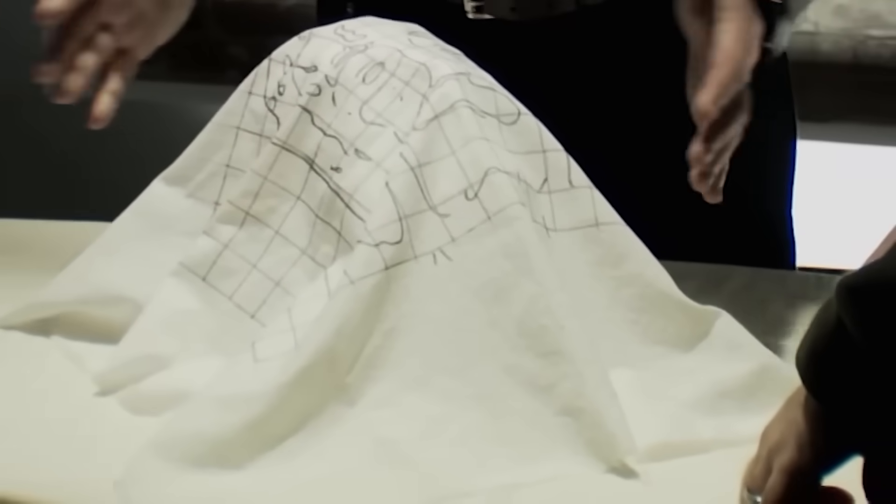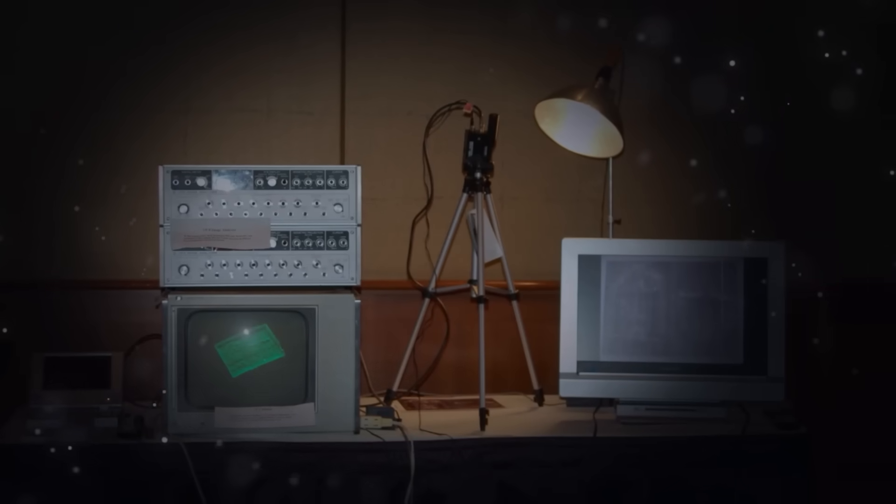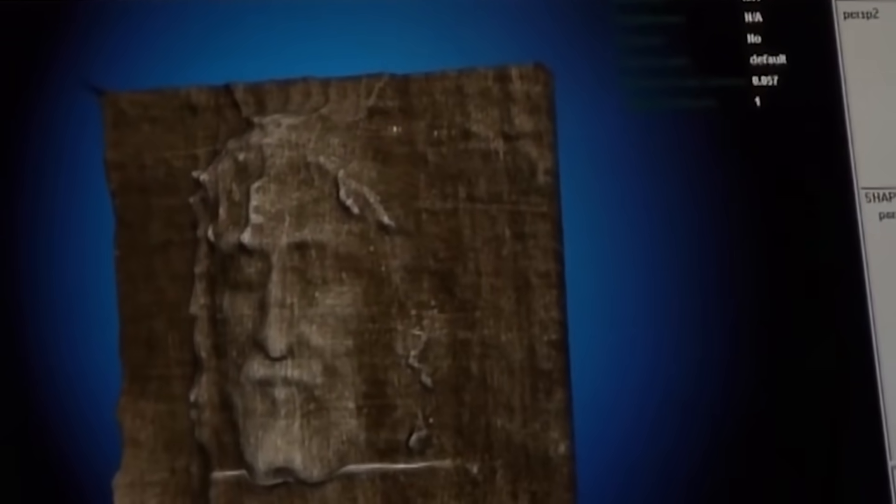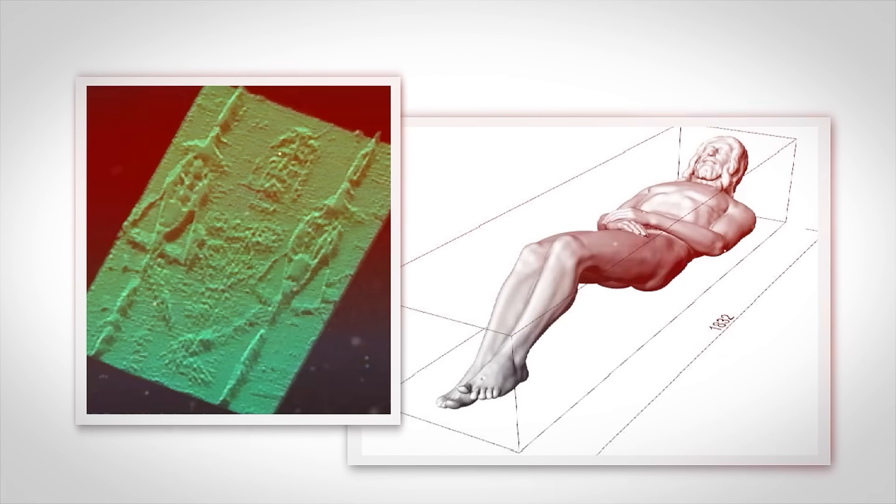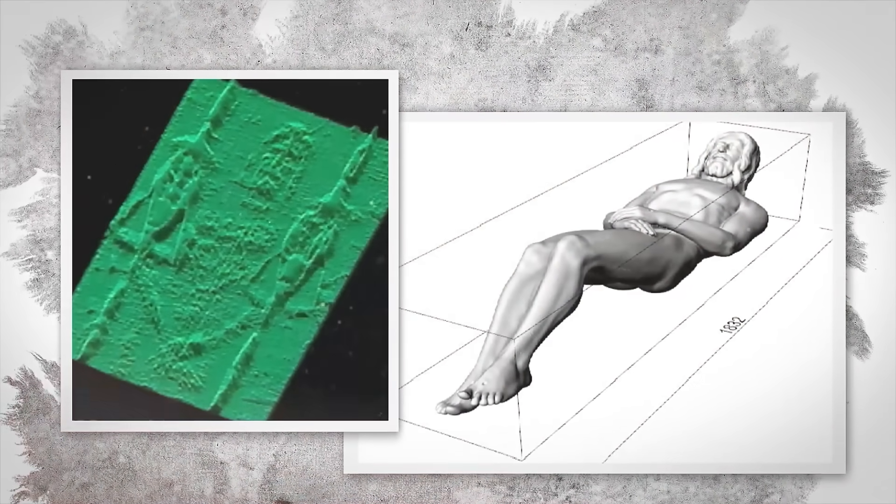The image contains accurate three-dimensional information. Back in the 1970s, researchers at the Air Force Academy used a VP8 image analyzer, a device used by NASA to map the surfaces of planets, on a photo of the shroud. They discovered that,